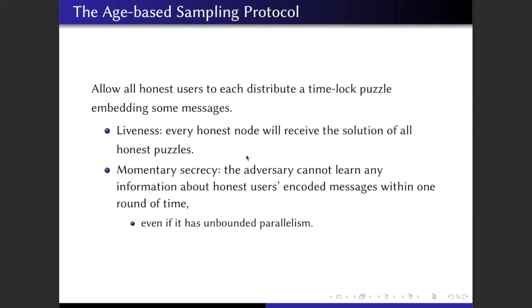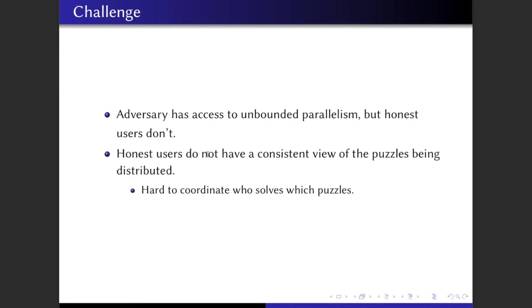However, there are several challenges here. The first challenge is that while adversaries have unbounded parallel machines, honest users don't. So if we have n time-lock puzzles, and honest users need to solve them one by one, then that would take n times the time to solve each puzzle, which is at least one round of time. So overall, honest users will need n rounds to solve the puzzles, which is just too much.